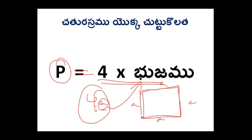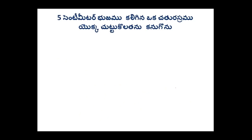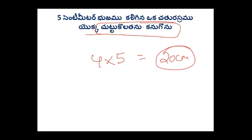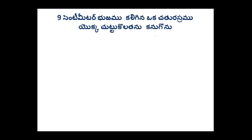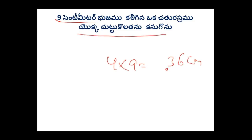We will explain the same thing. If we are talking about 5 cm, we can explain the same thing. 4 is 5, so we can explain the same thing. If you want to do it, you will need to do it in 90 cm.